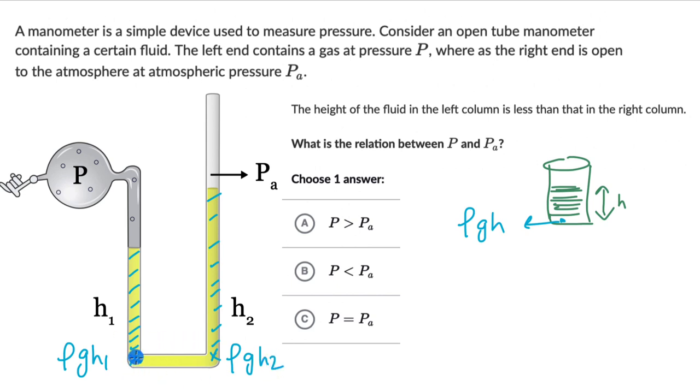But the total pressure at this point, that would be P plus ρgH1 because there is already a pressure of gas P at this end. So the total pressure is pressure due to the gas plus the pressure due to the fluid of height H1. And the total pressure due to the fluid of height H2 plus the atmospheric pressure, that is PA plus ρgH2.